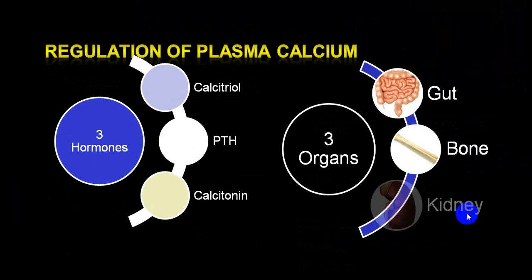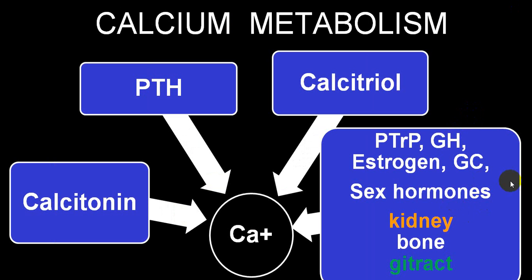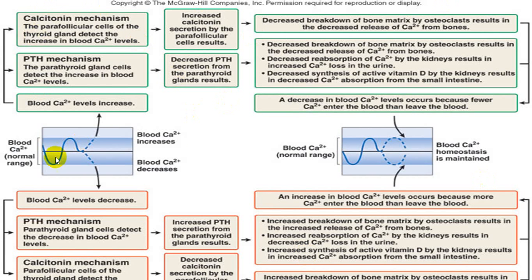Glucocorticoid, thyroid hormone, and estrogen are the main additional hormones affecting calcium. If calcium imbalance develops, it will have effect on two main hormones: calcitonin and parathormone. When calcium level increases, parathormone secretion will be inhibited while calcitonin secretion will increase.